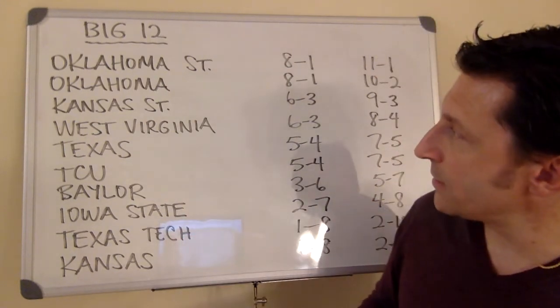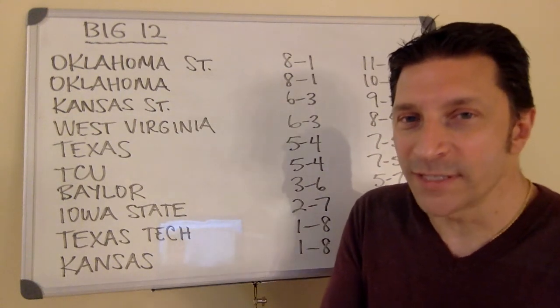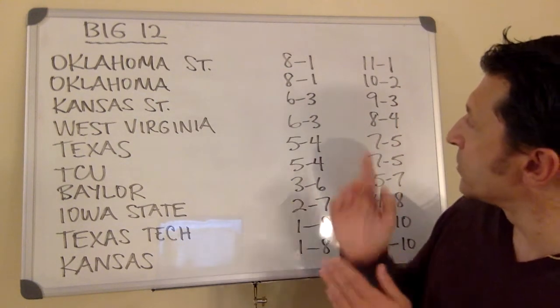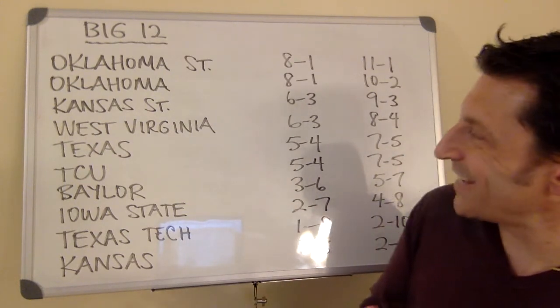Oklahoma, Oklahoma State, that's the class of the Big 12, and they are each going to lose one conference game. And the final records are right there. The Cowboys go 11-1, Oklahoma at 10-2.